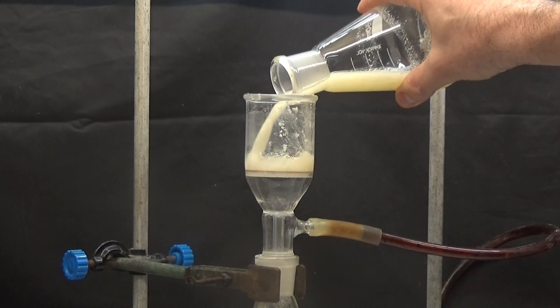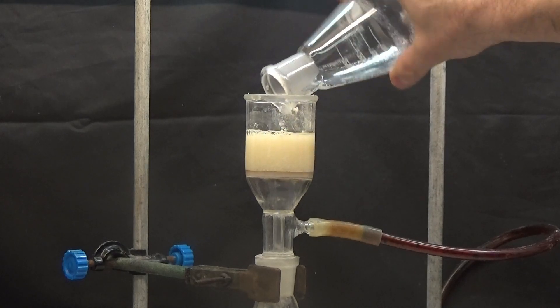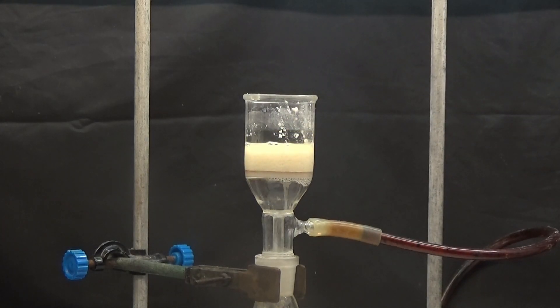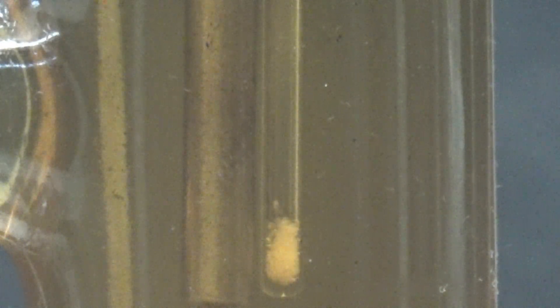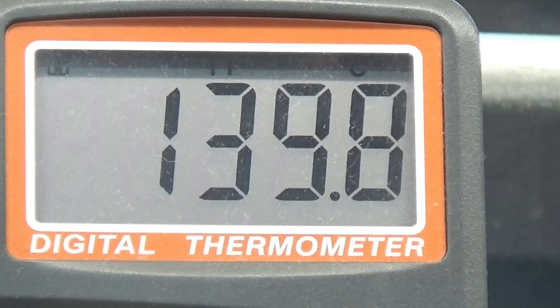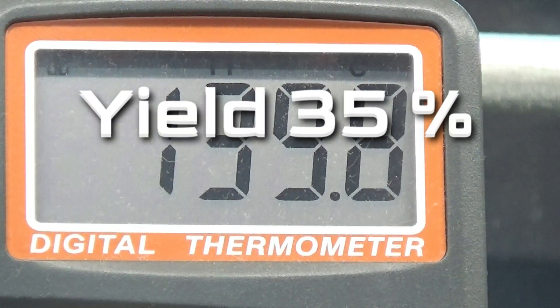The filtered toluene was evaporated to half its volume and allowed to cool. Crystals with a melting point of 138 degrees were obtained, a value very close to that of pure orthochlorobenzoic acid. The yield of this operation with respect to chlorotoluene was 35%.